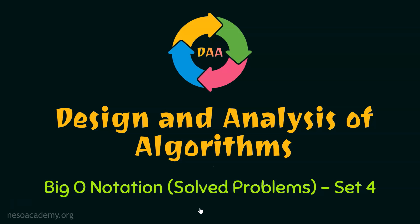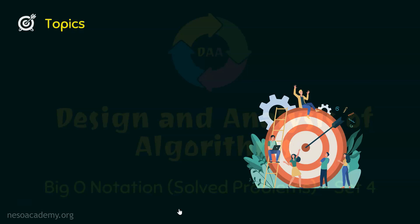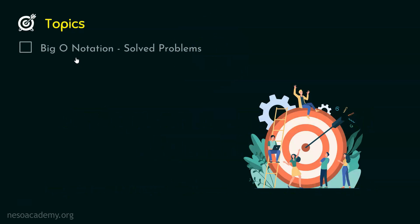We are in the last set of Big O Notation Solved Problems. This is set number 4 of Big O Notation Solved Problems. In this lecture, we will solve two problems on Big O Notation. Let's proceed and solve those problems.